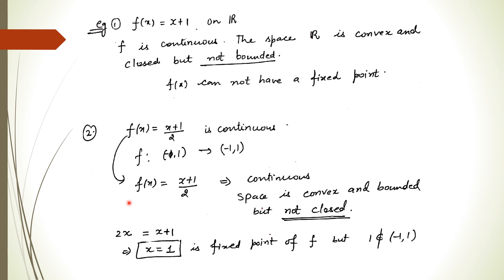Another example: let f(x) = (x + 1)/2 defined on the open interval (−1, 1). This function is continuous and the domain is convex and bounded, but it is not closed — so again it is not compact. Finding the fixed point: setting (x+1)/2 = x gives x = 1, which is a fixed point of the function, but this point does not belong to the domain. So the mapping has no fixed point in this domain. If we consider the closed interval instead, the set becomes compact and the fixed point exists.